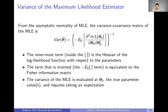There are three things in particular to say about this variance expression. First, I want to talk about the innermost term — the Hessian of the log-likelihood function with respect to the parameters. Then the term that's inverted, everything inside the curly brackets, is equivalent to the Fisher information matrix. Finally, I want to point out that the variance of this MLE is evaluated at the true parameters, theta zero, which means we'll need to address how to handle that in practice.